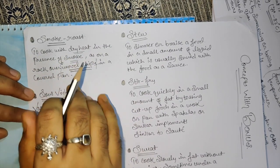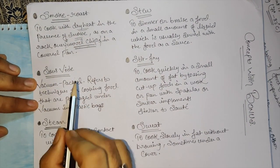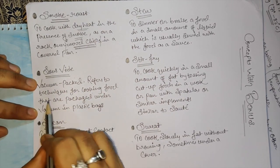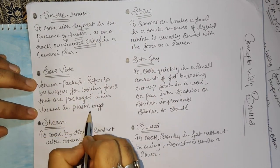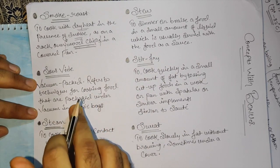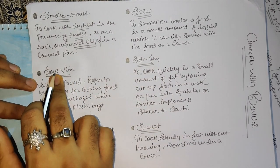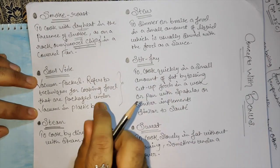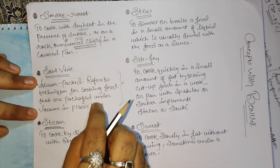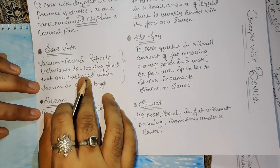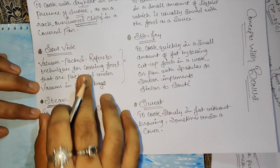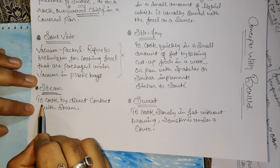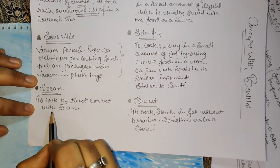Sous vide - vacuum pack, refers to technique for cooking food that is packed under vacuum in plastic pack. I'll elaborate more about this scientifically in next video, why we do sous vide and searing meat. Steam - to cook by direct contact with steam.